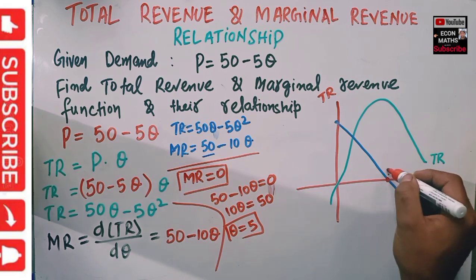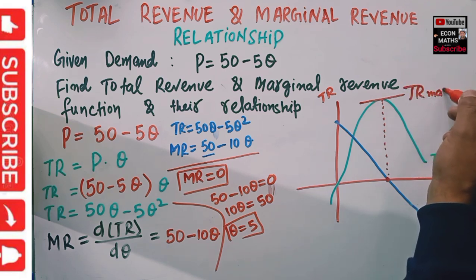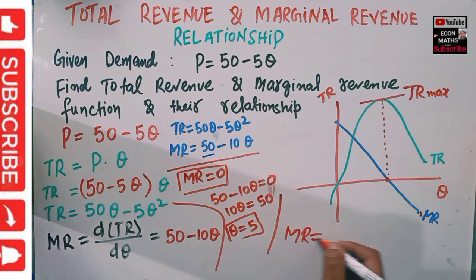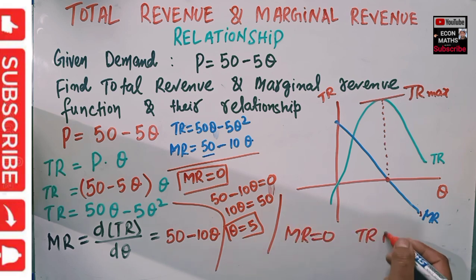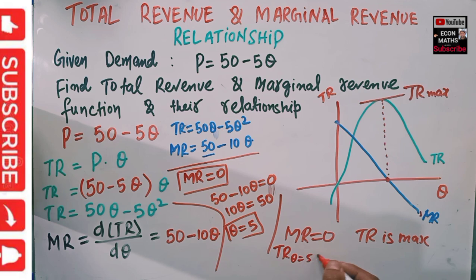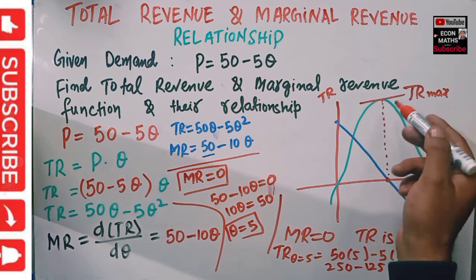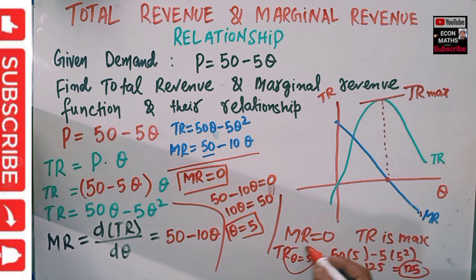So when MR = 0, total revenue will be maximum. The relationship is: when MR = 0, total revenue is at its maximum. To find the maximum total revenue, we plug Q = 5 into the total revenue function: TR = 50 × 5 − 5 × 5² = 250 − 125 = 125. So the output level that maximizes total revenue is Q = 5, and at that point MR = 0.